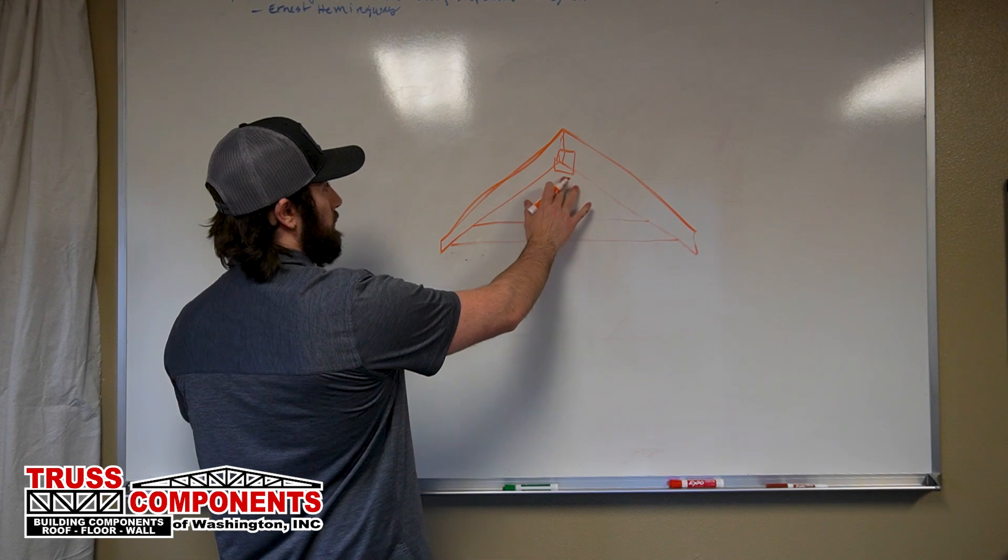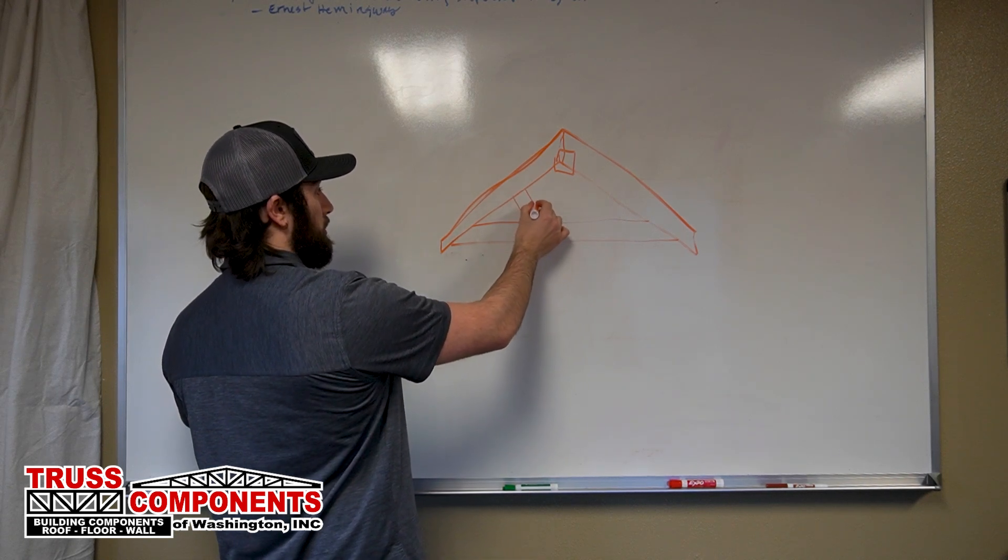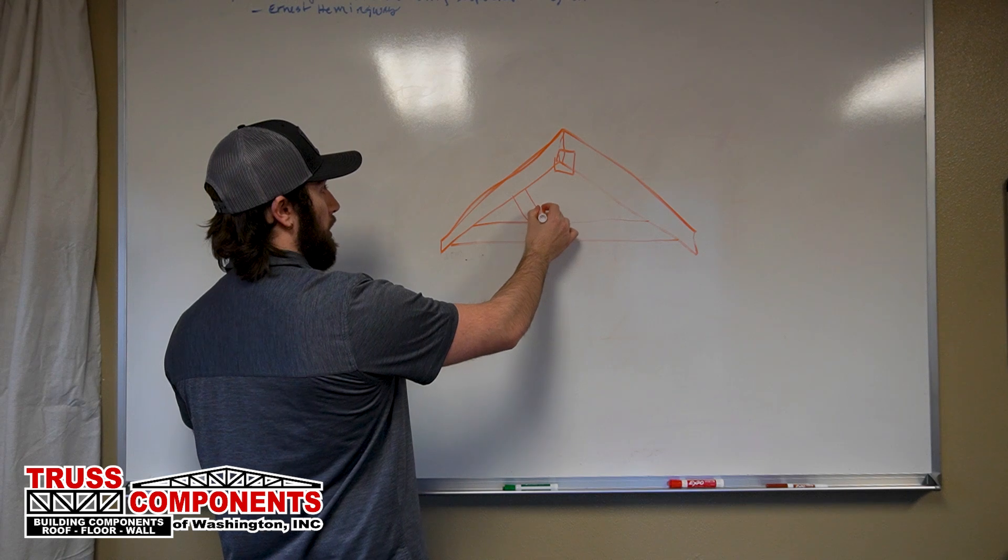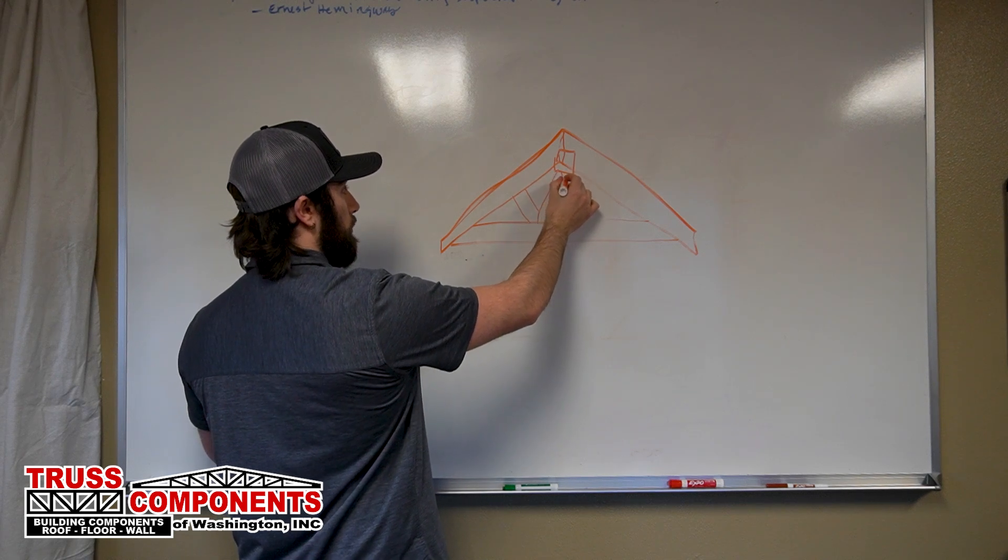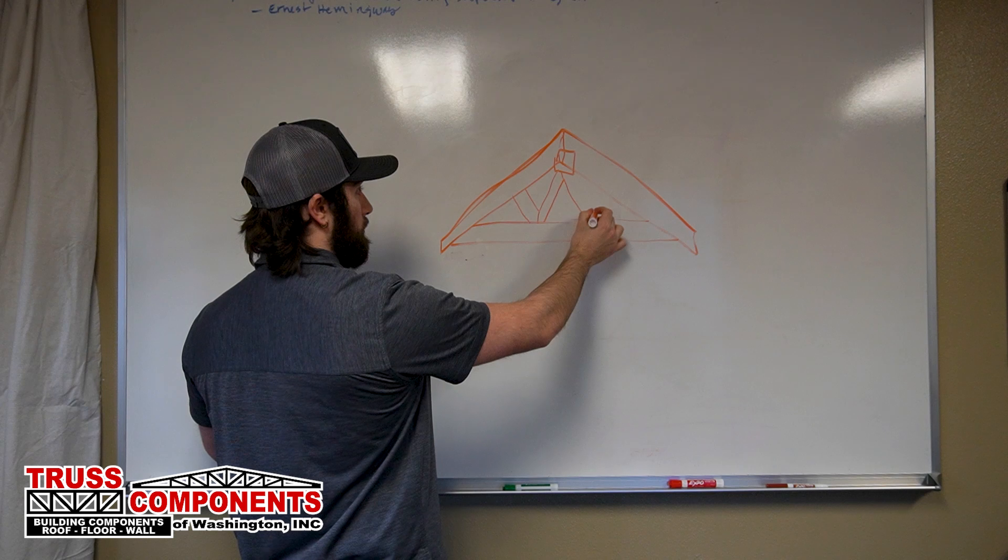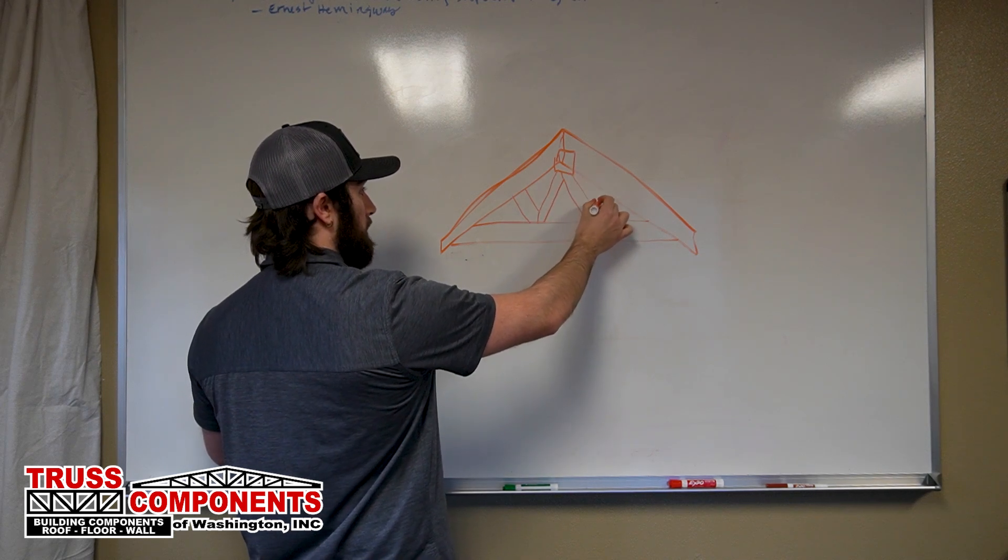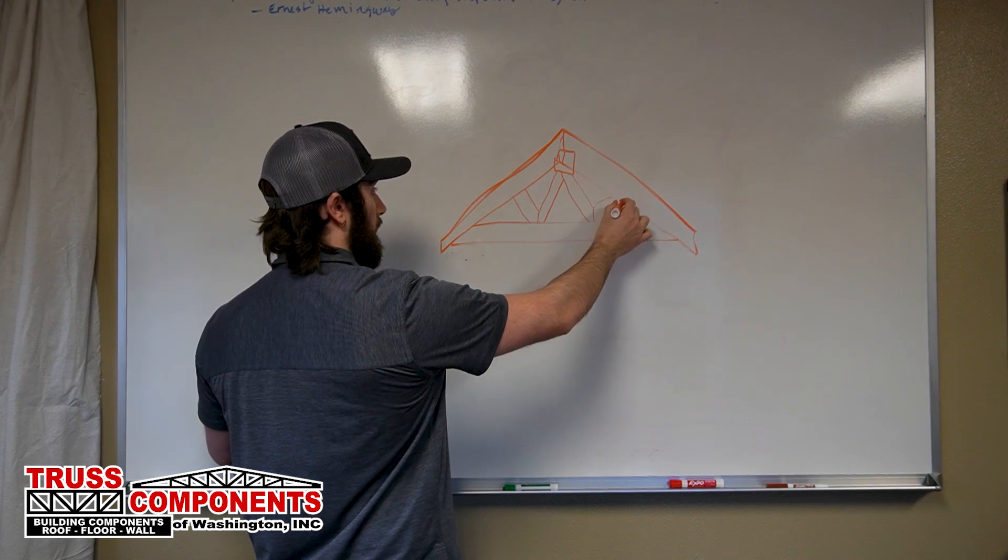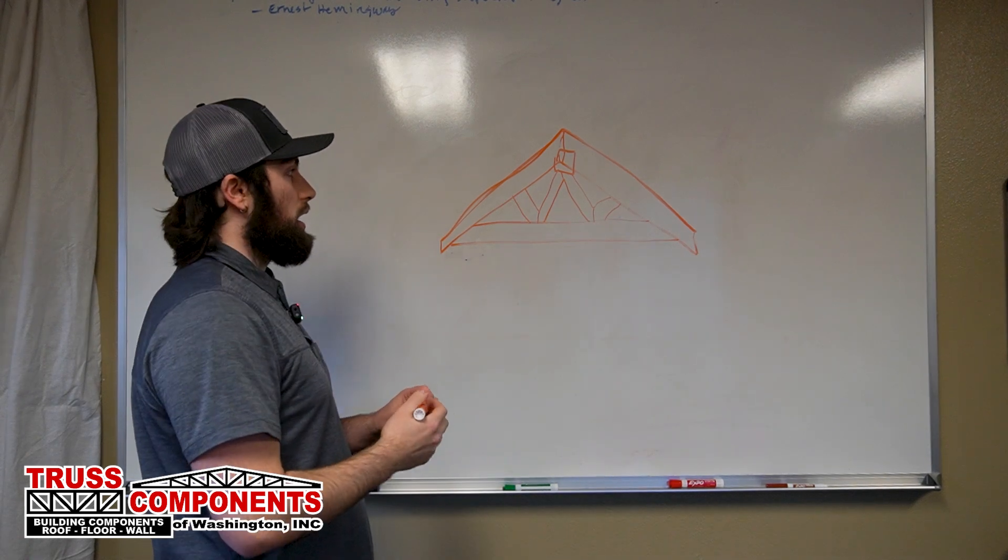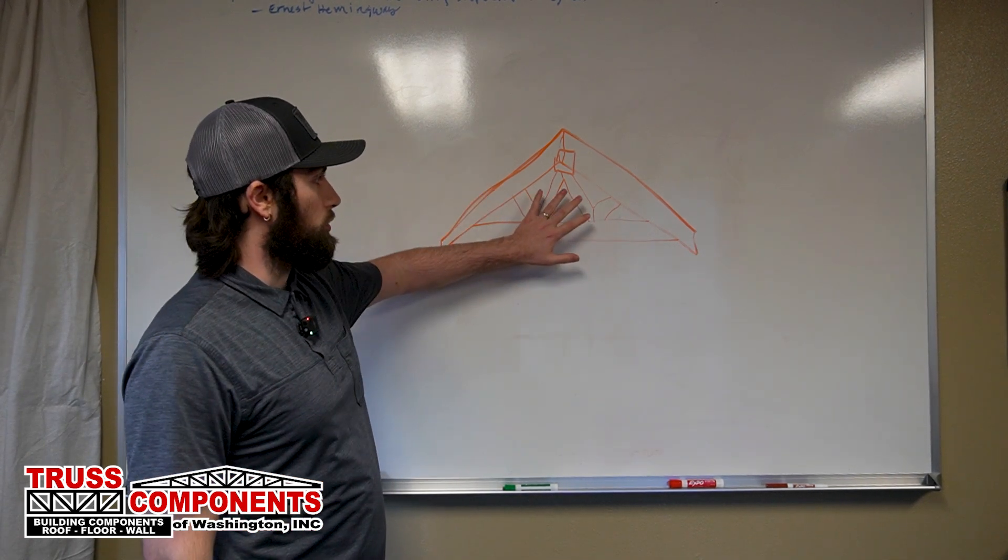Now typically we have these members that go between the top and bottom chords called webs. These webs help to reinforce the shape of the truss and they transfer forces between the top and bottom chord.